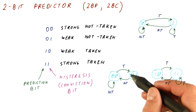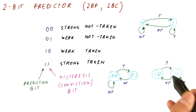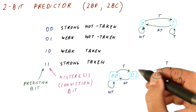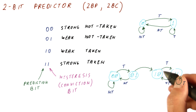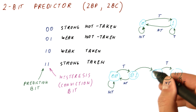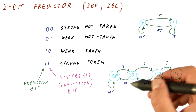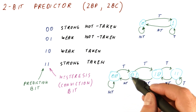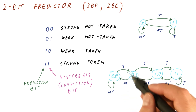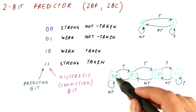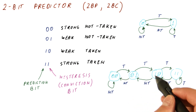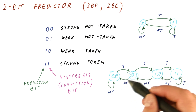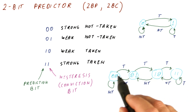However, we can have a branch that tends to be not taken for a while and then changes its mind and starts being taken for a while. If we are in the weak taken state and see another taken outcome, we go to one of the taken states; if we see not taken, we move to one of the not-taken states. A single anomaly costs one misprediction, but a switch in behavior costs two mispredictions.